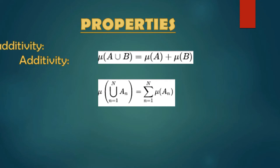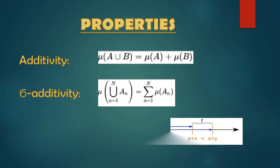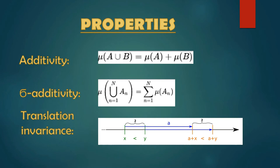If we have here a segment of size 2, and we just slide it over the line, no matter the position, it will keep the same size. This is called translation invariance.